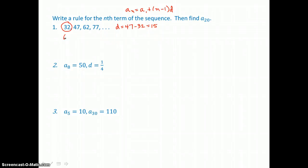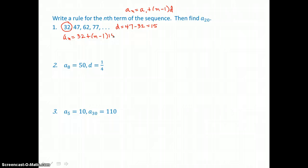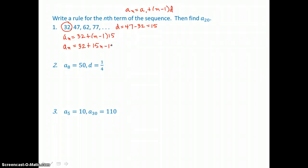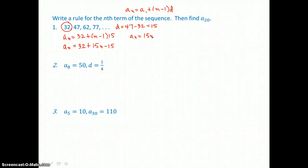Now we can write our rule for the nth term. We substitute in the first term of 32 and the common difference of 15. This is linear, so we distribute and add like terms: 15n minus 15, and adding like terms gives us a sub n equals 15n plus 17.